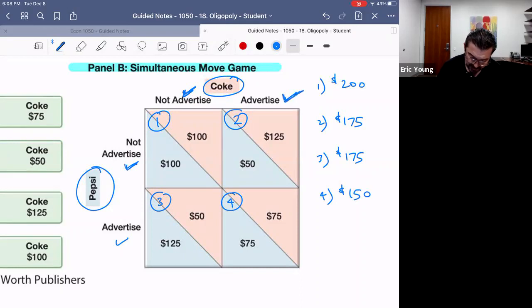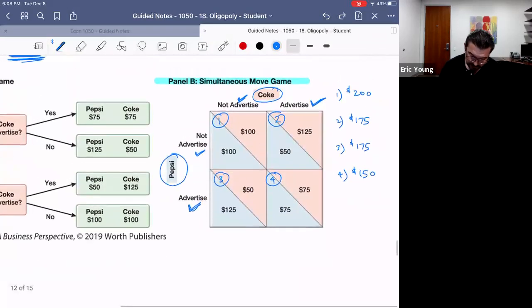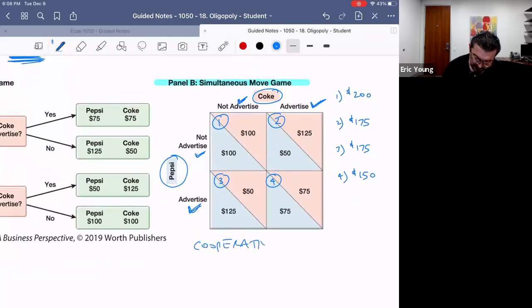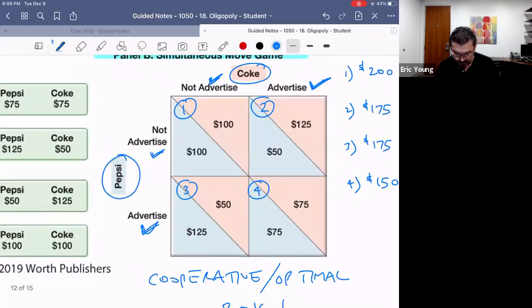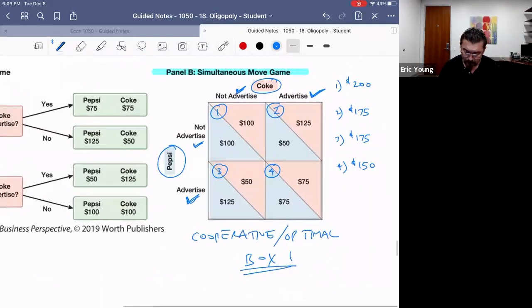If they both decide to advertise—advertise and advertise—and they meet in this box, they would both suffer; they would only make 150 dollars total profit. So clearly, we would say in economic theory that the cooperative solution, in other words the optimal solution for Coke and Pepsi, would be box one: don't advertise, save that money, boost your profits. But will that happen? And the answer is no, because if you were to take this payoff matrix and tease it apart, you would find that both Coke and Pepsi, even though box one is optimal, they both face a dominant strategy.